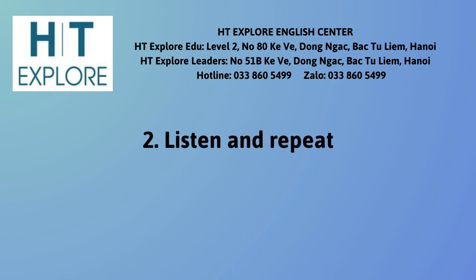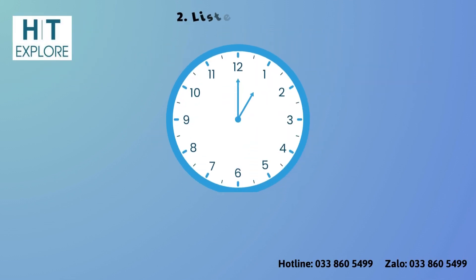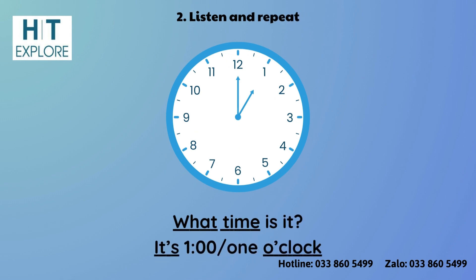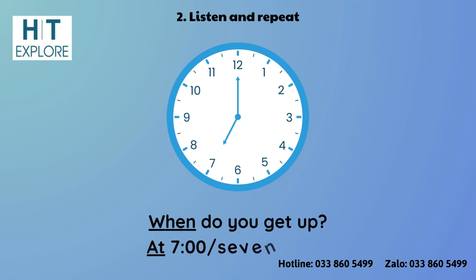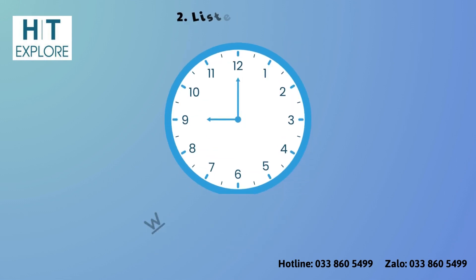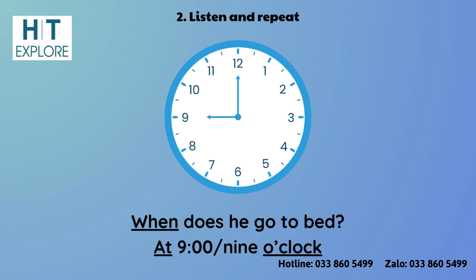Activity 2: Listen and Repeat. What time is it? It's 1 o'clock. When do you get up? At 7 o'clock. When does he go to bed? At 9 o'clock.